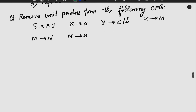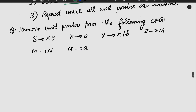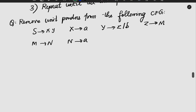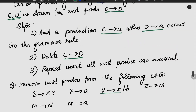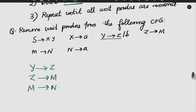The question is: remove unit productions from the following CFGs. To do this, we identify unit productions. For example: Y gives Z, Z gives M, M gives N. We have individual terminals that represent unit productions.